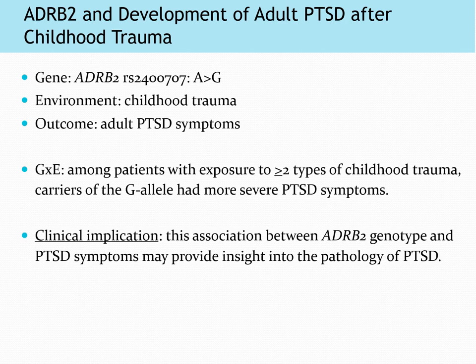For this gene-environment interaction, the gene was ADRB2, the environmental factor was exposure to childhood trauma, and the outcome was adult PTSD symptoms. In summary, in patients with exposure to two or more types of childhood trauma, carriers of the G allele had more severe PTSD symptoms, with that effect increasing with the number of G alleles carried. Clinically, this gives us information about the beta-2 receptor's role in fear conditioning and PTSD pathology, and could point toward possible treatments — for example, propranolol is a lipophilic non-selective beta blocker that can cross the blood-brain barrier and is already used off-label for anxiety.